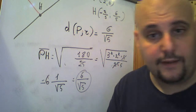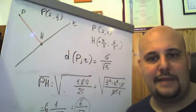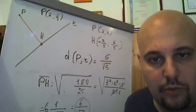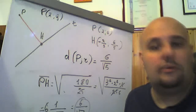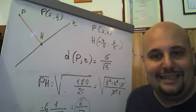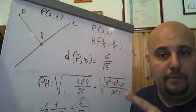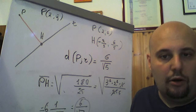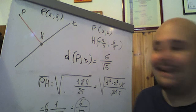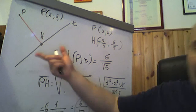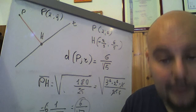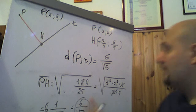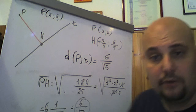Pertanto ricordatevelo: la distanza di un punto da una retta, che si applica con quella formula, non è altro che la distanza del punto P dal punto H che è la proiezione ortogonale di P sulla retta R. Sono la stessa identica cosa.